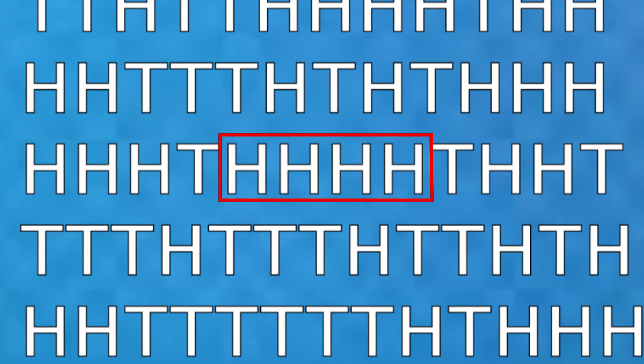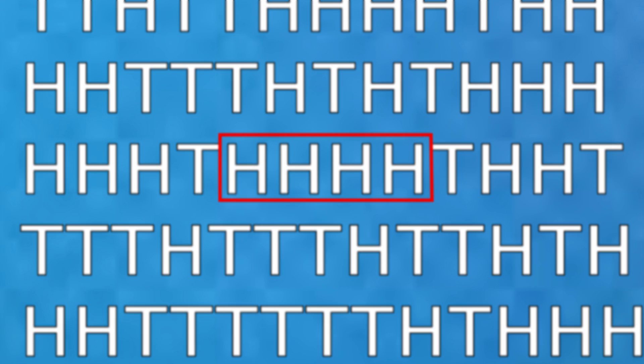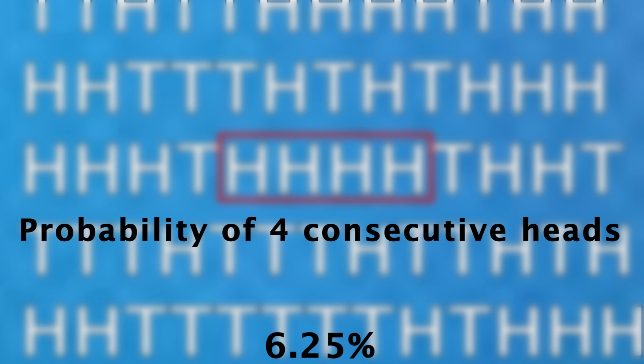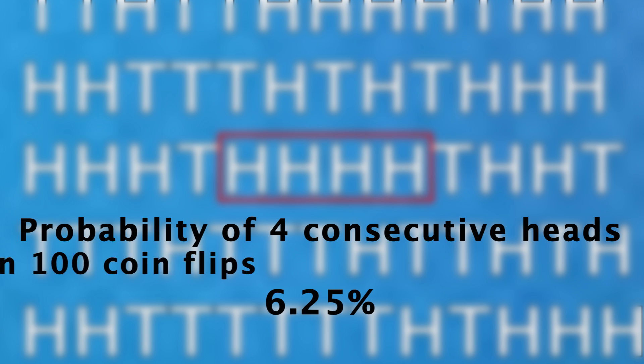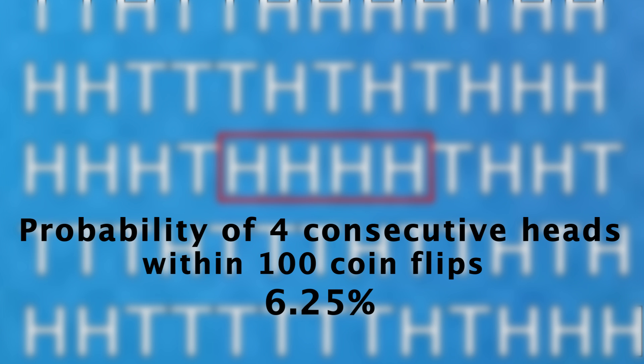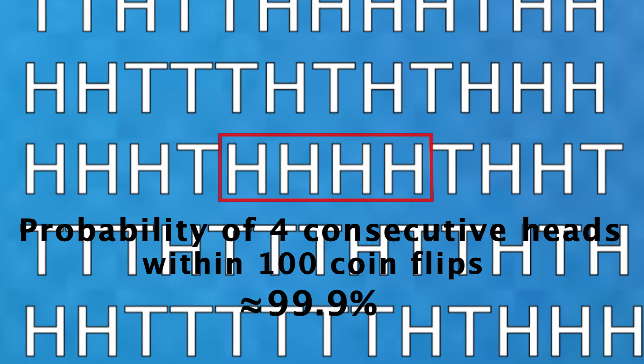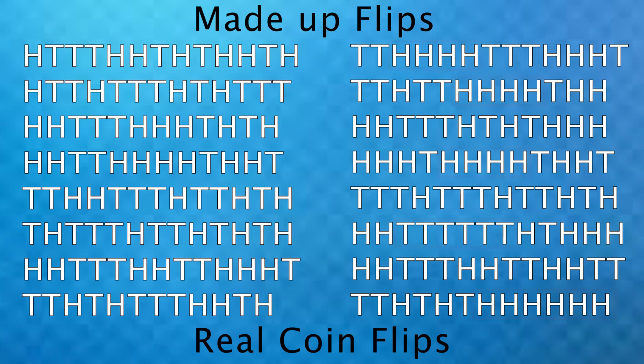Here we can see a run of 4 heads in a row. The chance of that happening in 4 flips is only 6.25%, but out of 100 flips, the chance of that happening at some point is about 99.9%. On this right side we can see a few of those runs of 4 and more heads or tails in a row, which isn't too surprising in 100 flips.